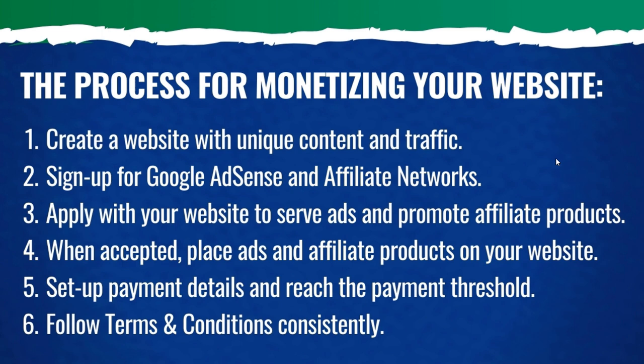The third step is to apply with your website to serve ads and promote affiliate products. Fourth, once you're accepted, you want to place the ads and the affiliate products or affiliate advertisements on your website. And then steps five and six: make sure you set up your payment details and reach the payment threshold. That's going to vary by channel — some of them are $10, some of them are $50, but once you reach those thresholds you'll start getting paid.